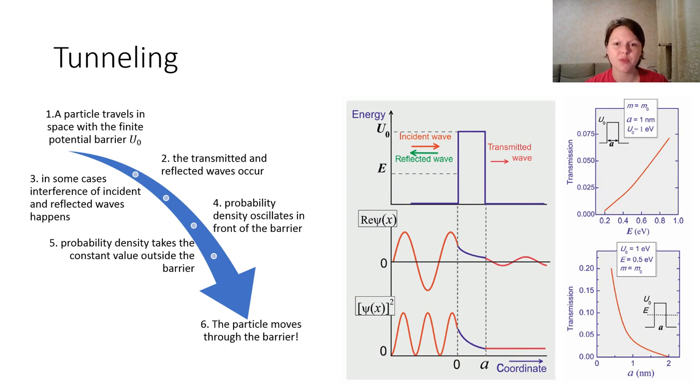In some cases, the reflected wave and transmitted wave satisfies the Schrodinger equation for the incident wave. In that specific case, the interference between the incident and reflected waves happens. It means that probability density oscillates in front of the barrier. Its value increases and takes outside the barrier.